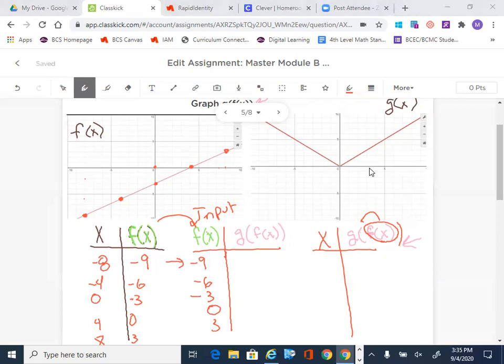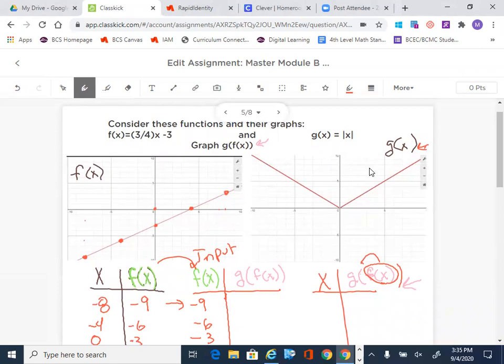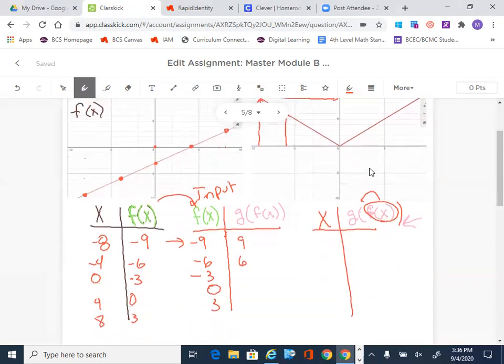And now I just go to the g of x graph. Well, the g of x graph is over here. And now what I'm going to do is I'm going to use these x values to determine what the g values are. So I'm going to say, well, negative 9. If I go to negative 9, that is approximately right here. And that looks like at negative 9, that's going to give me a value of 9. And then negative 6 is going to give me a value of 6. And then I just keep working it just like that. Negative 3 gives me a value of 3, 0 gives me a value of 0, and 3 gives me a value of 3.